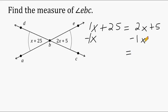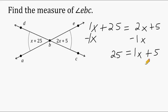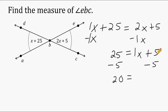2X minus 1X is just 1X. We still have our plus 5 on this side, and on the left-hand side we still have positive 25. Next we're going to do the opposite of adding 5, which is to subtract 5, and we have to do the same thing on the other side of our equal sign to balance our equation. 25 take away 5 is 20. The opposite integers cancel each other out, making 0. Now all we have on the right-hand side is just X. So we can read it as 20 equals X, or X is equal to 20.